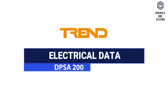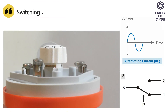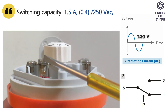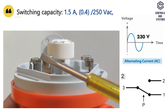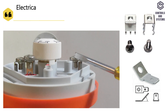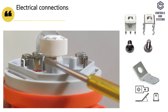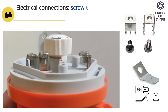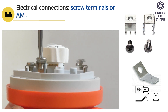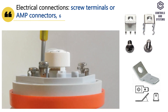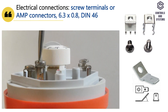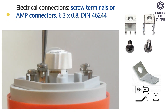Electrical data: Switching capacity is 1.5 amps at 250 volt AC. Electrical connections are performed using screw terminals or AMP connectors, 6.3 x 0.8 mm DIN 46244.